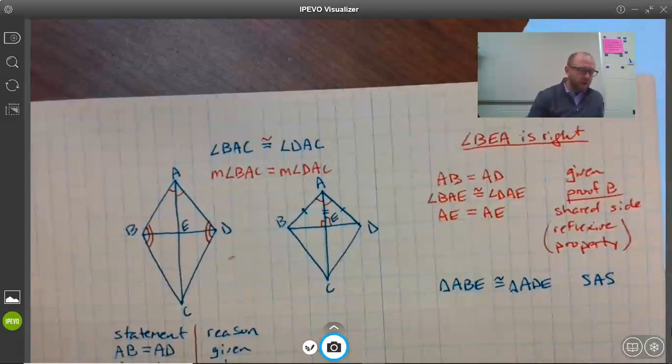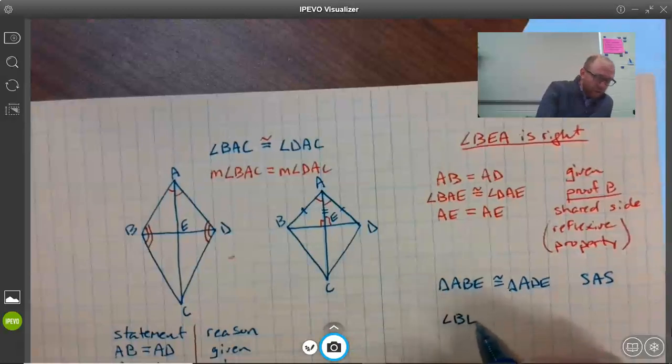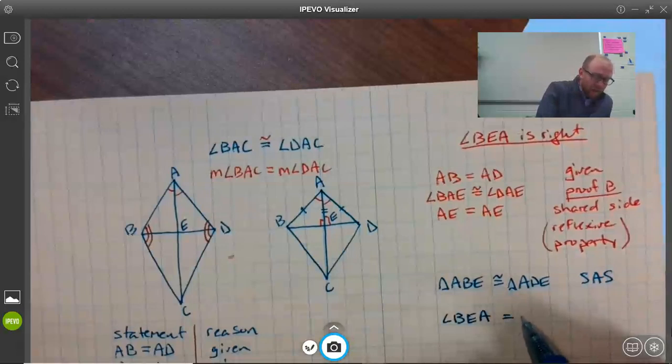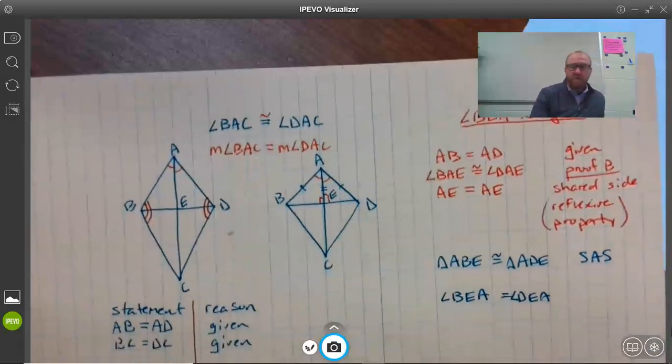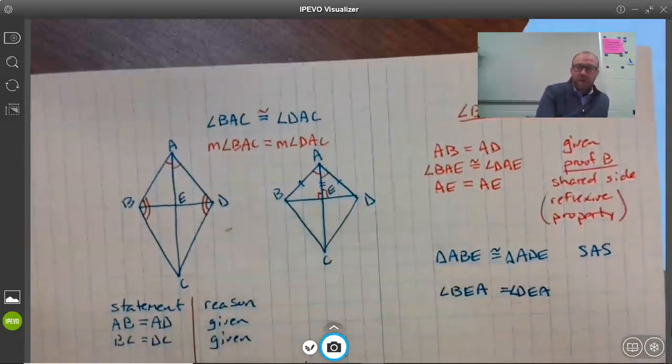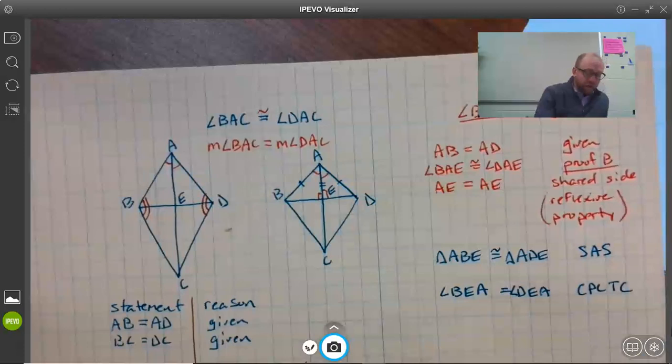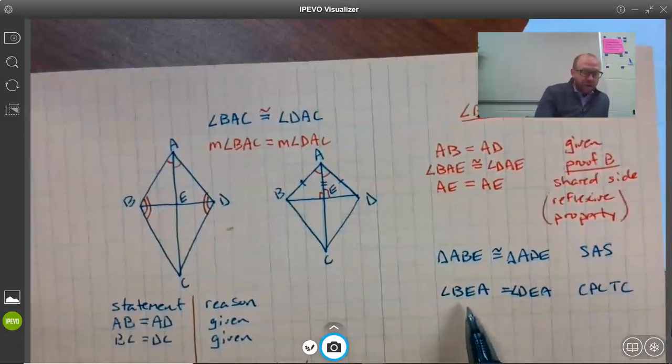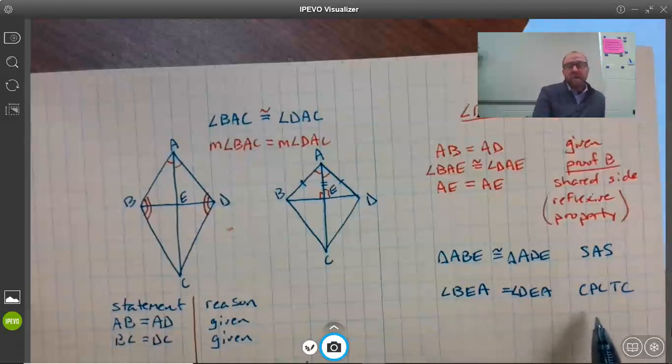Now we have that angle BEA equals angle DEA. Those two angles are equal—these are the two angles here in the middle. That's by corresponding parts of congruent triangles are congruent. Some people may drag this out by saying the two angles are congruent, then making a separate statement that the angles have equal measures, because that's the definition of congruence. Some people will break this down into two separate statements.